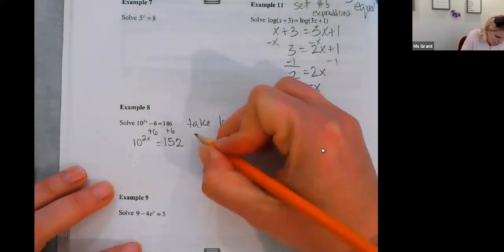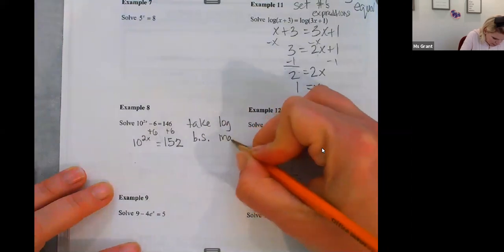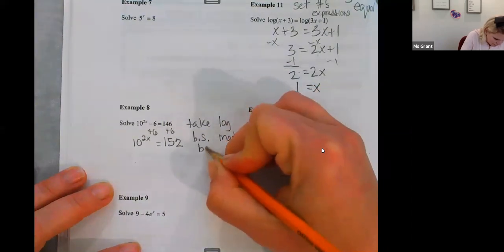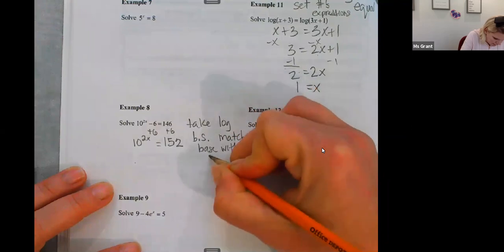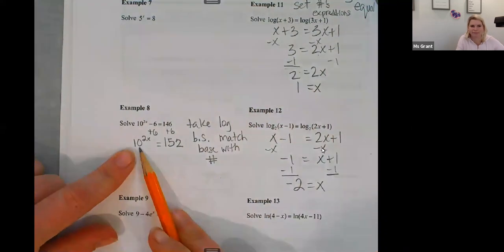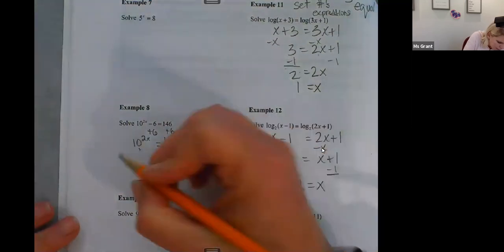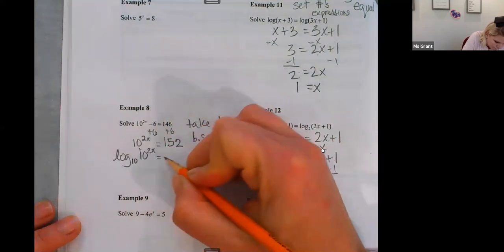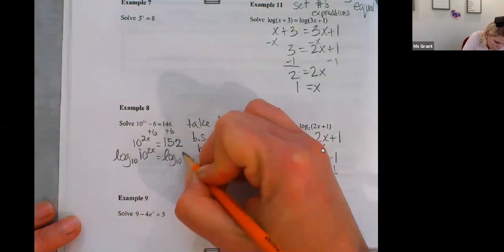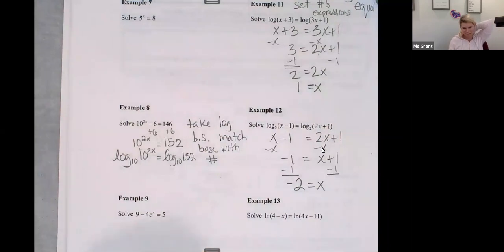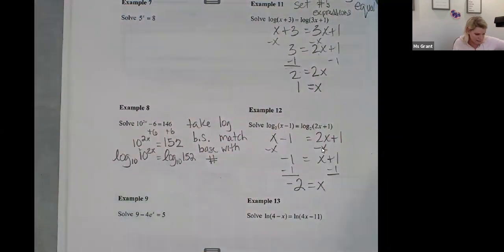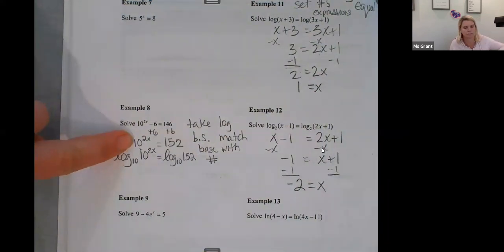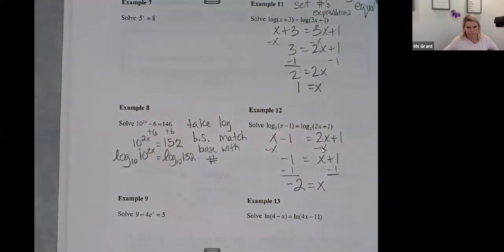So I'm going to take the log of both sides. Take the log of both sides. And we're going to match the base with the number. Like this number is 10. So I'm going to take the log of 10, base 10. So it's going to look like this log. And I'm actually going to write the 10s this time, even though I normally don't like writing them. So I took the log of both sides.